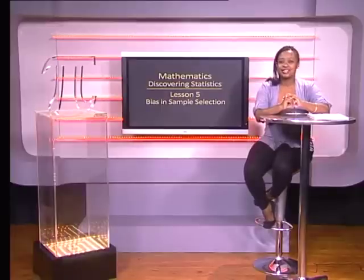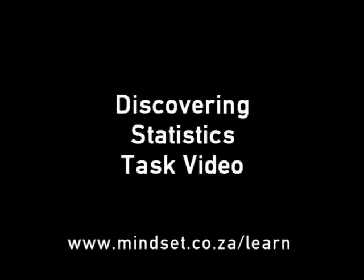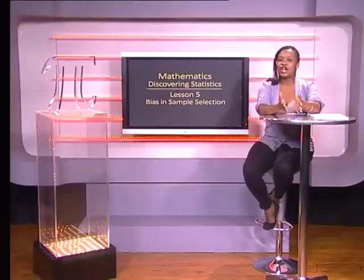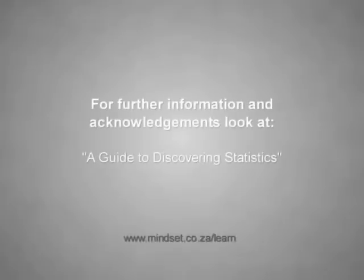Sample selection can greatly affect the data that comes out. Think about it — if we wanted to prove that a certain box of cereal was what most people bought, we could target only the people who already had the product in their trolley. Makes you think, doesn't it? Thank you for joining us. Remember to look at the tasks for this section in the Discovering Statistics task video. You'll also be able to learn more about statistics on our website, www.mindset.co.za/learn. Hopefully understanding bias in statistics will buy us some good grades. Bye bye.